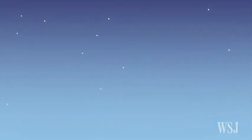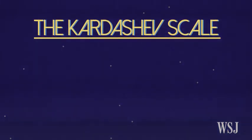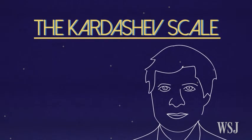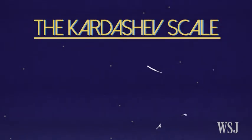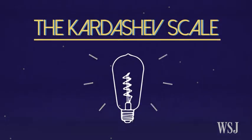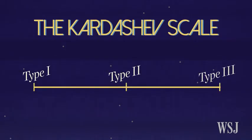To answer this, astronomers often point to the Kardashev Scale, developed in 1964 by Russian astrophysicist Nikolai Kardashev. He believed that advanced civilizations could be categorized by the amount of energy they collected and utilized, from Type 1 to Type 3.